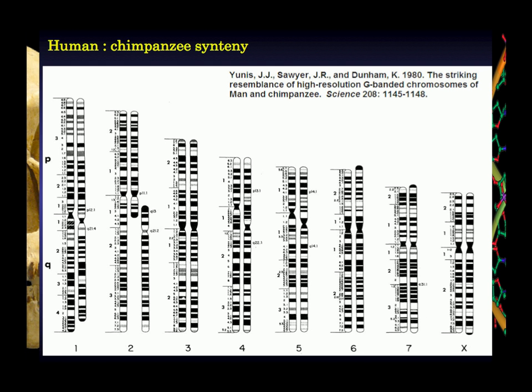We saw in fruit flies how there's evidence for chromosomes splitting and chromosomes joining. One of two things is proposed to have happened: either there has been a fission, where one chromosome has separated into two, or there has been a fusion, where what was once present as two separate chromosomes is fused into one.